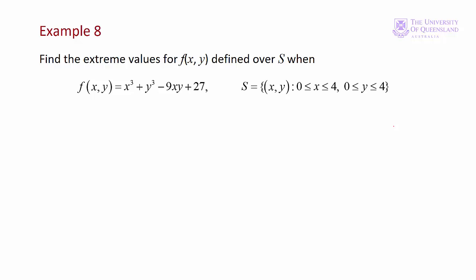In this example we want to find the global extreme points and the associated values of the function f over a particular domain. We have our function f equals x cubed plus y cubed minus 9xy plus 27. The domain is where both x and y are greater than or equal to 0 and less than or equal to 4.